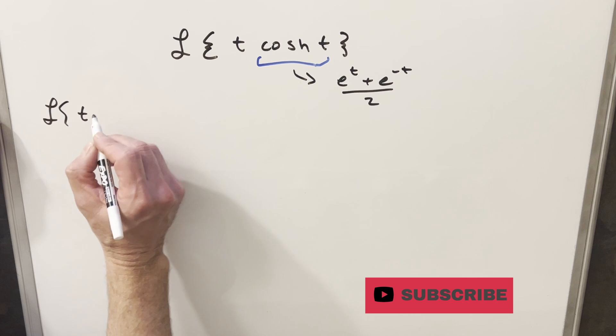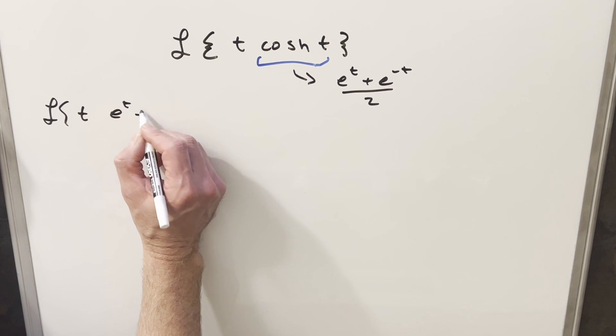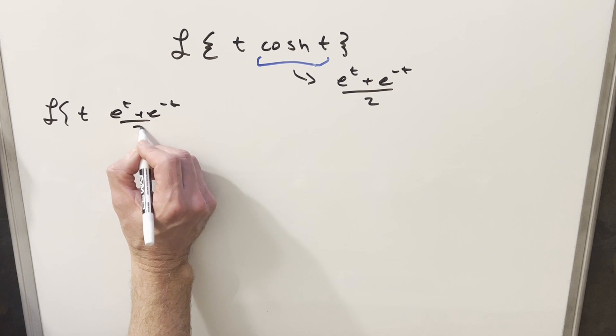If we rewrite our Laplace transform with this, we'll now write our cosh in terms of e to the t plus e to the minus t over 2.